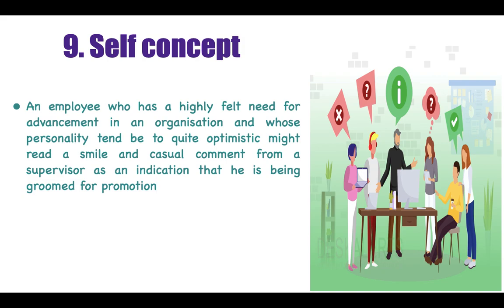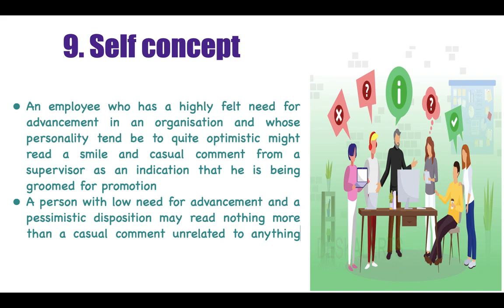The next barrier is self-concept. For example, an employee who needs a promotion and has an optimistic personality can read positive signals — from a customer's smile or a supervisor's comment — as reinforcement that he is being groomed for promotion. However, a person with low need for advancement who is very pessimistic will not be able to read or understand anything positive from the supervisor's comments. So self-concept is also important in having effective communication.